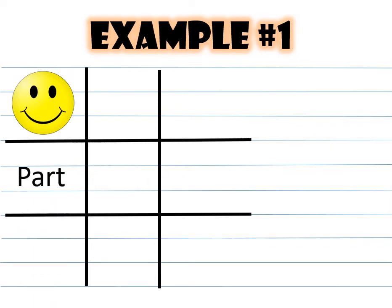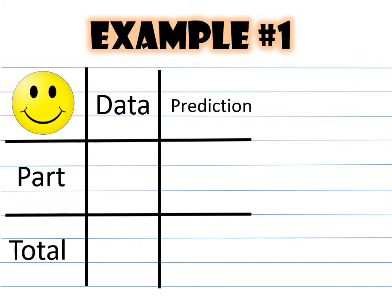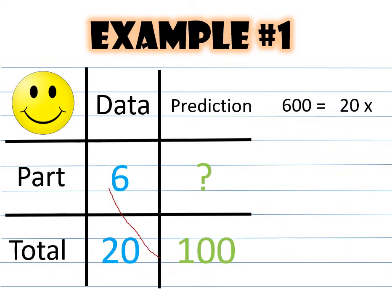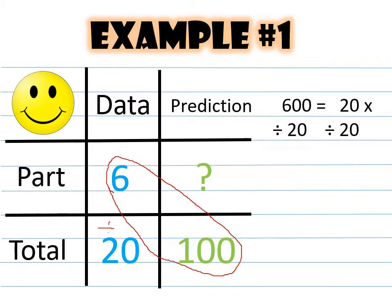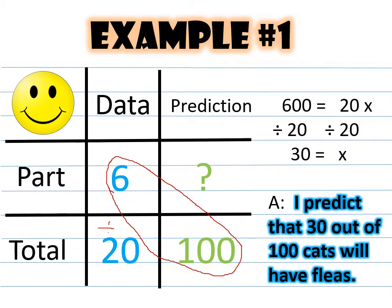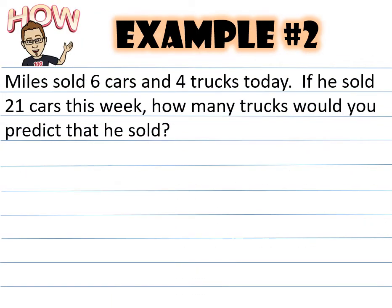Let's set up our tic-tac-toe board for example one. The smiley face goes in the top left corner; part and total go underneath; data and prediction go to the right. There were six cats with fleas out of a total of 20 cats. If she had 100 cats, we multiply six times 100 to get 600, then divide by 20 — the number we didn't use — and get 30. This means I predict that 30 out of 100 cats will have fleas.